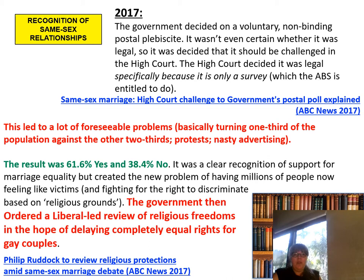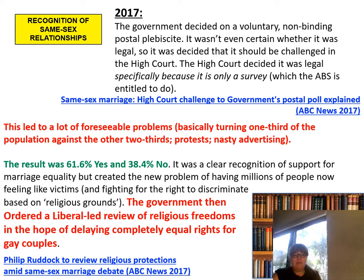This led to a lot of foreseeable problems, basically turning one third of the population against the other two thirds. There were protests and nasty advertising. The result, when it came in, was 61.6% of all Australians voted yes to gay marriage and 38.4% voted no. It was a clear recognition of support for marriage equality, but created new problems of millions of people feeling like victims and fighting for the right to discriminate based on religious grounds. The government then ordered a Liberal-led review of religious freedoms in hope of delaying completely equal rights for gay couples.